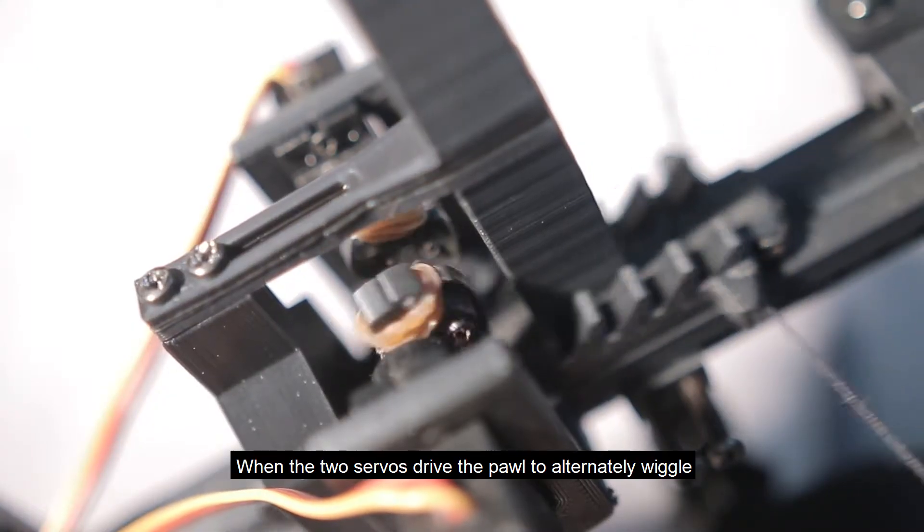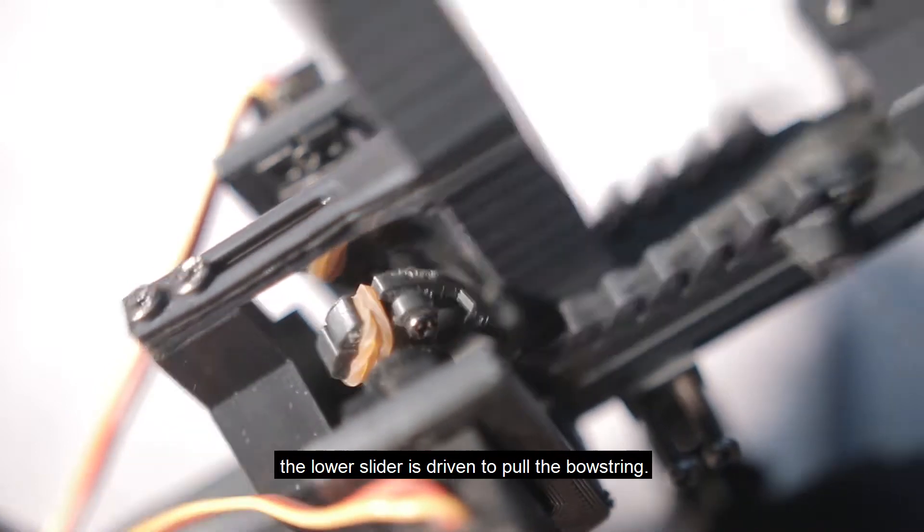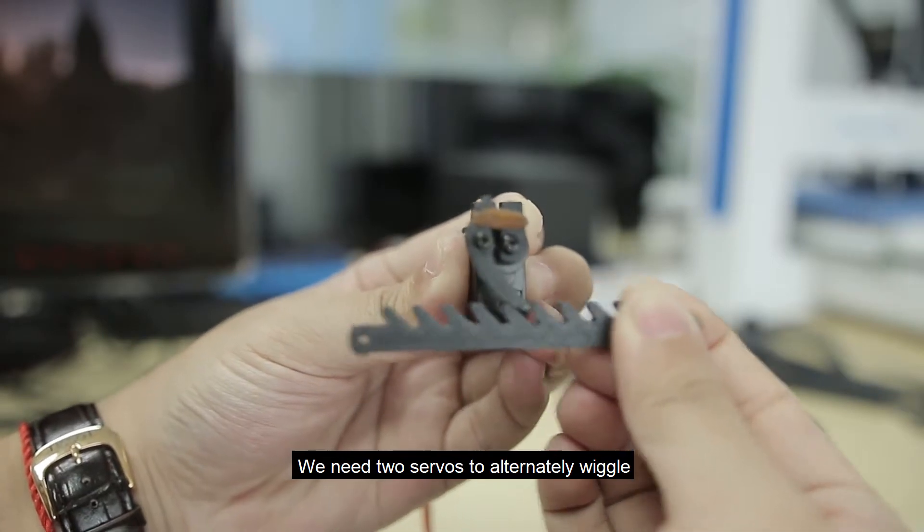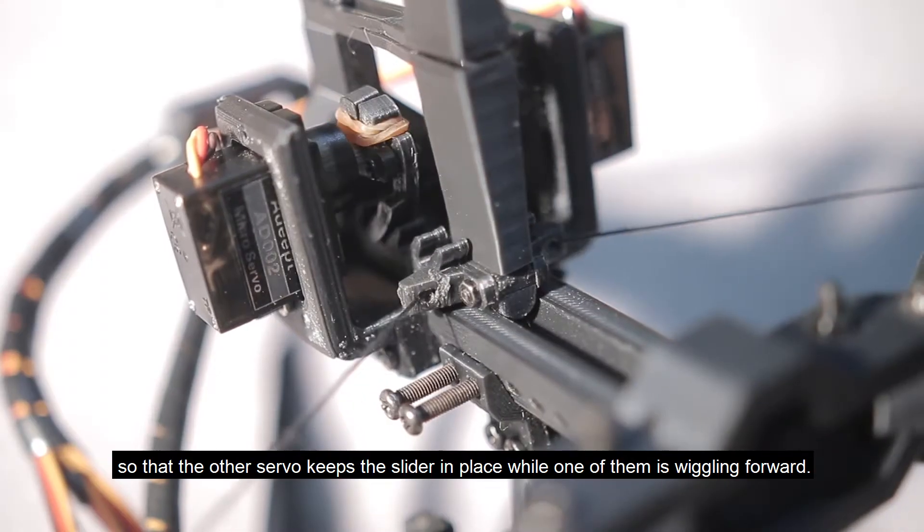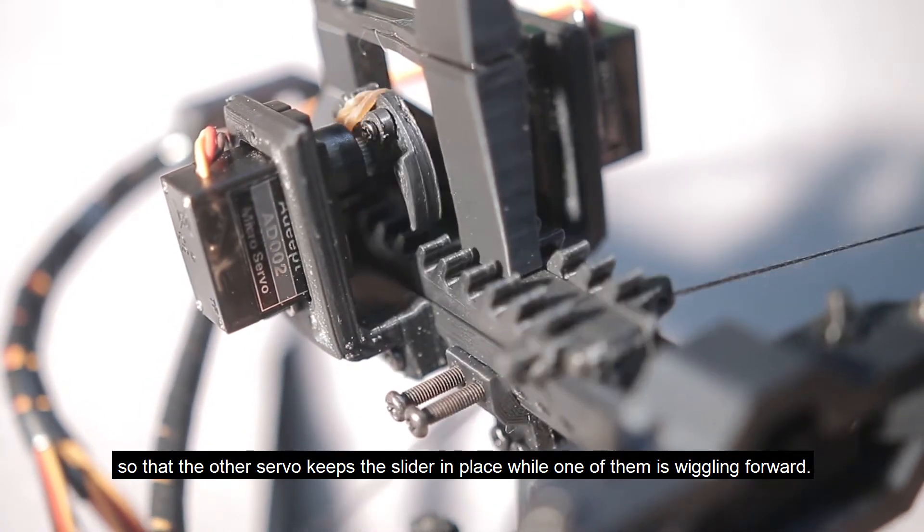When the two servos drive the pawl to alternately wiggle, the lower slider is driven to pull the bowstring. We need two servos to alternately wiggle so that the other servo keeps the slider in place while one of them is wiggling forward.